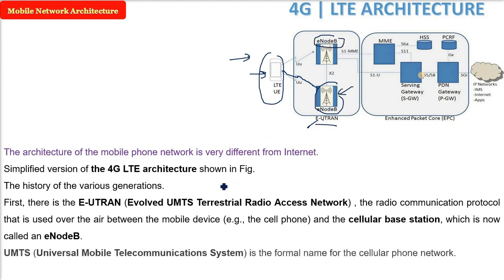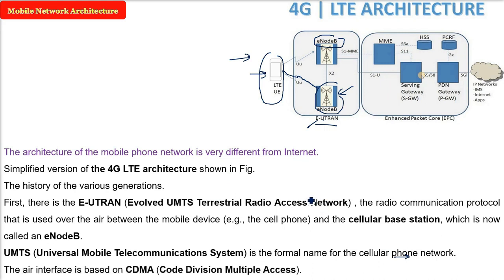The cellular phone network is now formally called UMTS — Universal Mobile Telecommunication System. When 3G came, we started talking about UMTS, and it is now the formal name for the cellular phone network. The air interface is based on CDMA — Code Division Multiple Access.